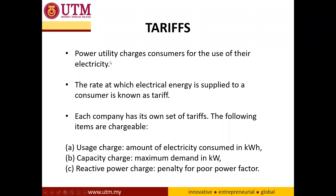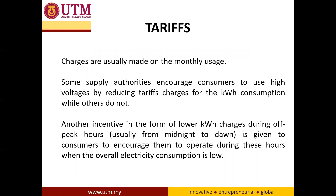The second item is the fixed charge, also called the capacity charge, which depends on the maximum demand in kilowatts declared by the building owner — this is a fixed charge. The third item is the reactive power charge, which is a surcharge or penalty if the building owner produces a very low power factor. A low power factor affects power quality, the amount of current generated by the generator, and overall system losses.